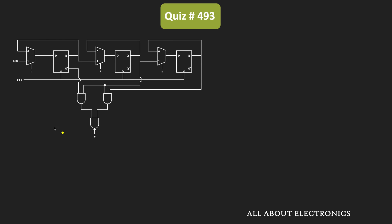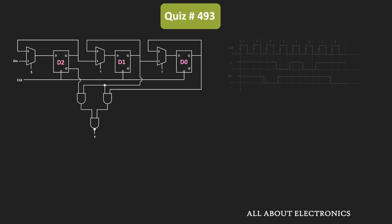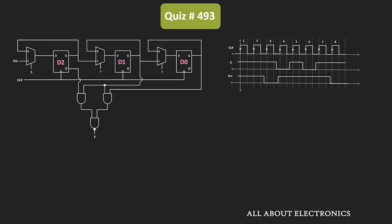Let's say these three flip-flops are D2, D1 and D0. Whenever S input is 1, this DIN input will be applied to the D2 flip-flop. And if you see D1 and D0 flip-flops, the output of the previous stage is connected as an input to these flip-flops. We have already been given the timing sequence for the DIN and S inputs, and also given that initially all the flip-flops have been reset to 0.